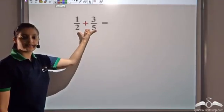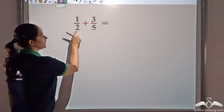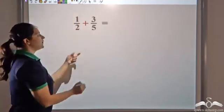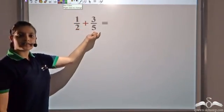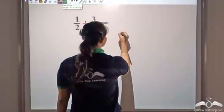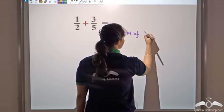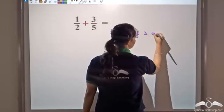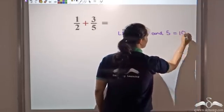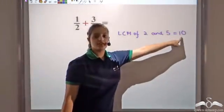Let's say I have 1/2 plus 3/5. How do I add this? The denominators are different. What I will do is take the LCM of the denominators and make them the same. LCM of 2 and 5 is 10, so I will make the denominators equal to 10.